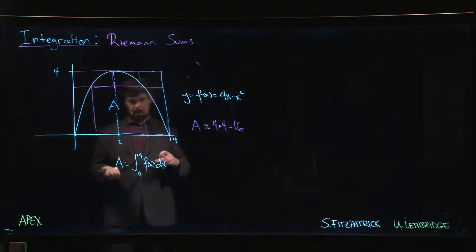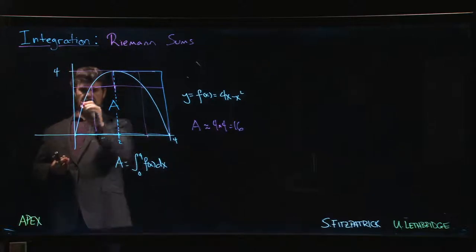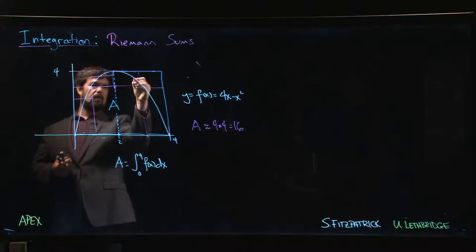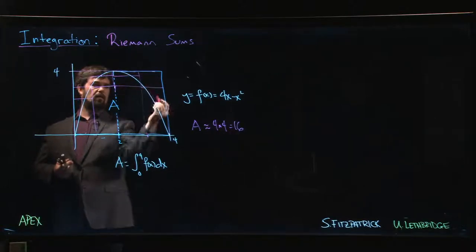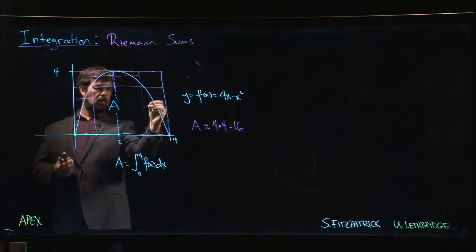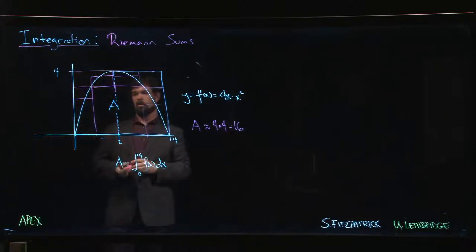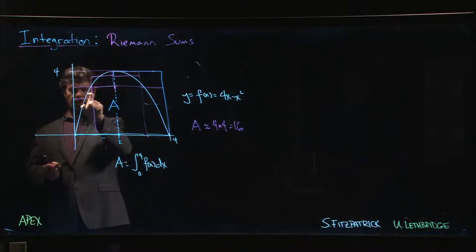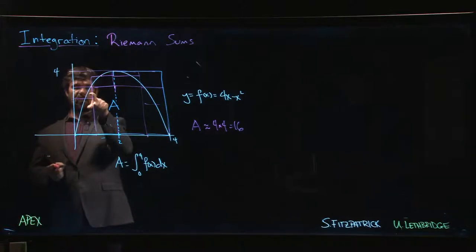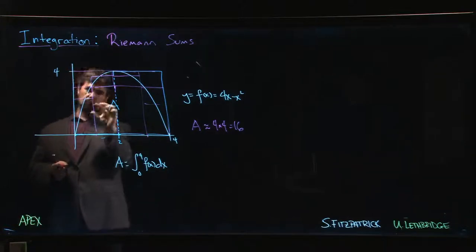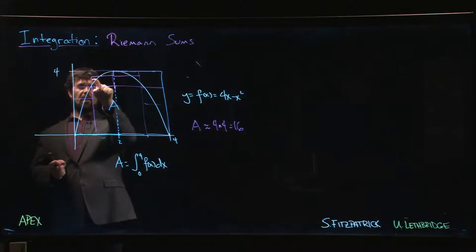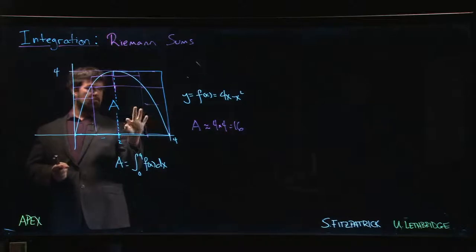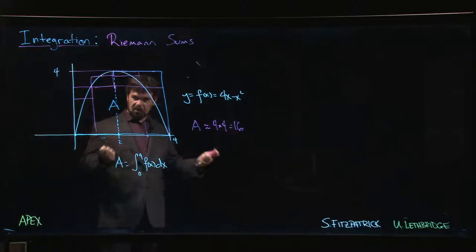Or maybe we go with midpoints again — doing this rectangle, this rectangle, this rectangle, and this rectangle. Thinking about how we're doing: in each one we've got a bit extra that we shouldn't have, and a bit we're missing. We're gaining this piece and losing that piece — they kind of cancel. And you keep going, repeating this procedure.